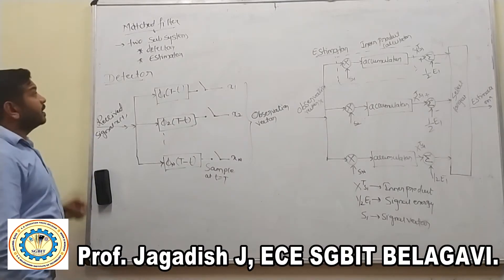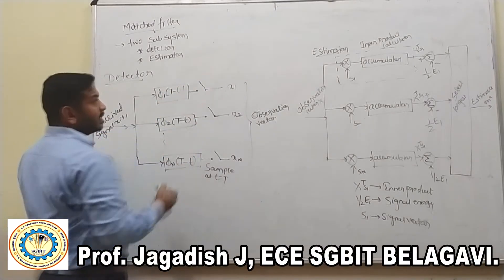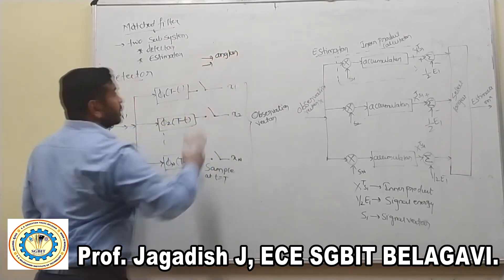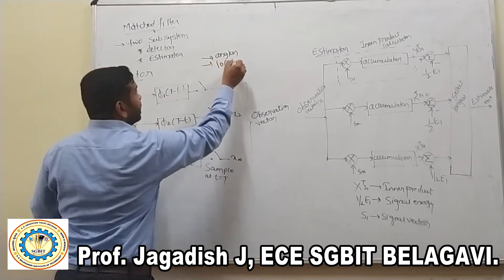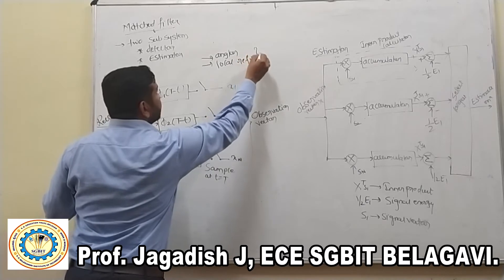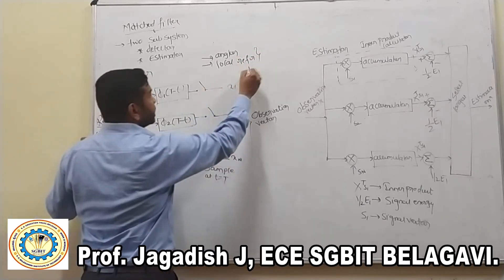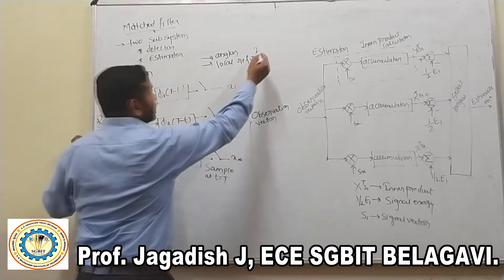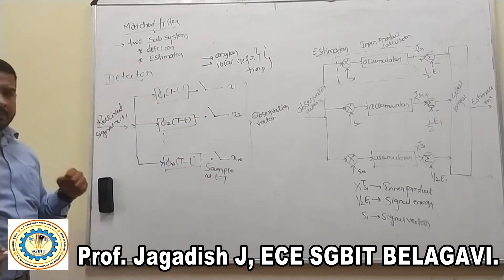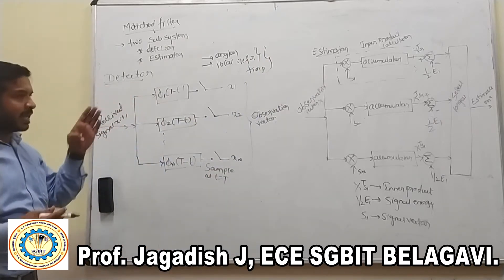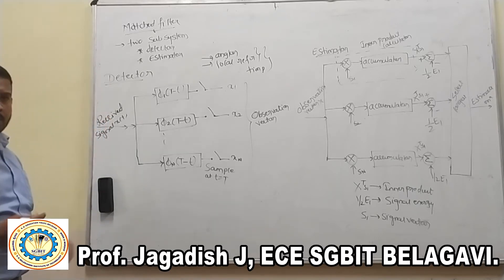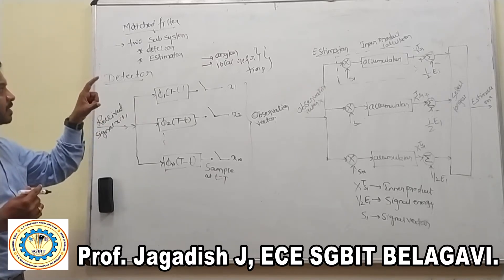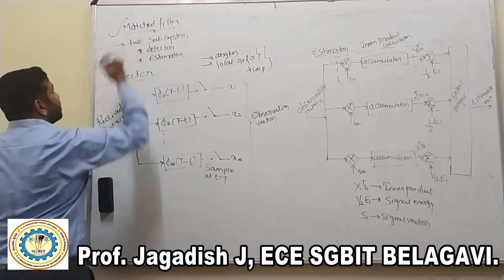Before starting with the matched filter, in the correlation filter, we have to use a multiplier — specifically the analog multiplier. We also have to use the local reference signal. Whenever we use these two signals, time synchronization is one of the most important parameters. Considering these parameters, time synchronization is required in the correlation receiver, and it occurs efficiently by using the matched filter.